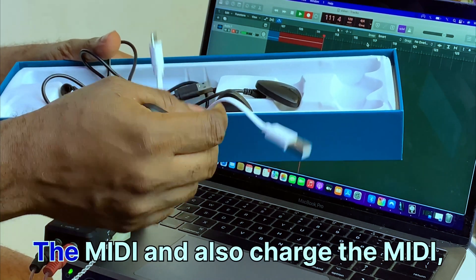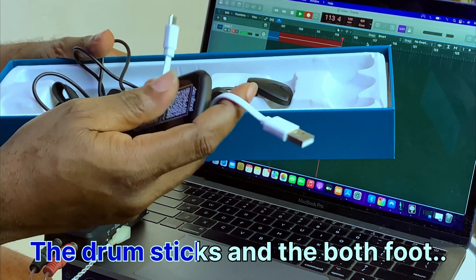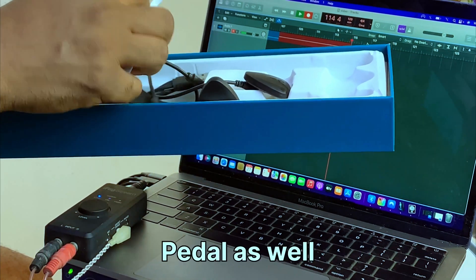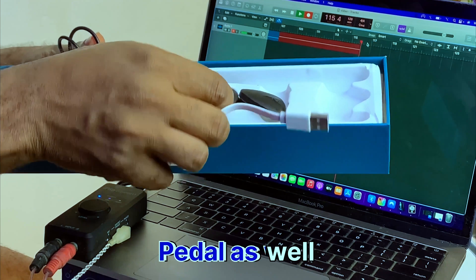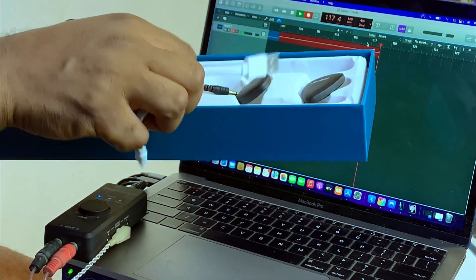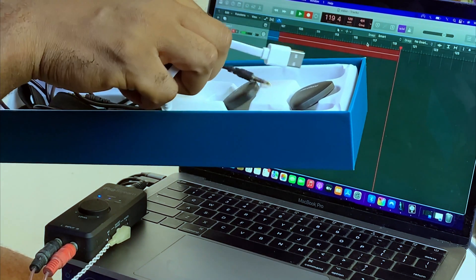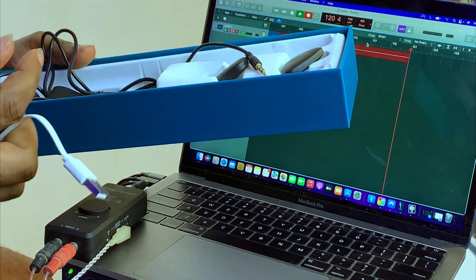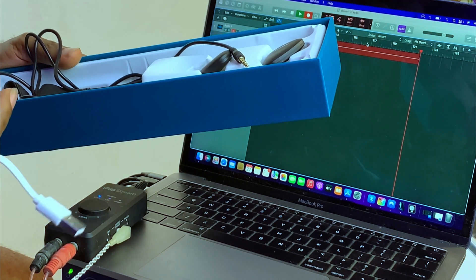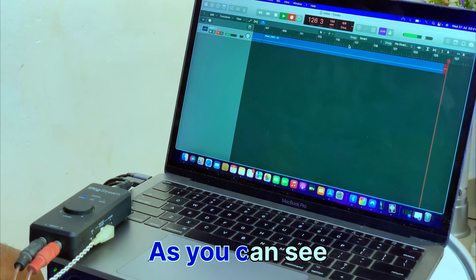The cables that AeroBand comes with - this one is for the MIDI adapter if you have to charge and connect to the system. It comes with a Type-C cable to charge the kick drum and hi-hat, and also this cable to connect to your speaker or whatever you want to use.